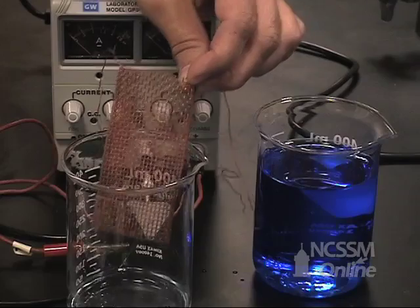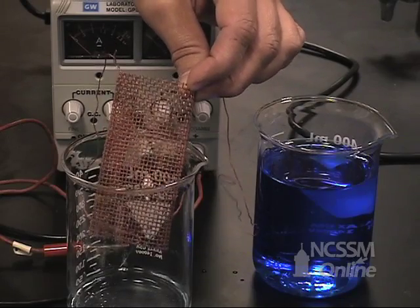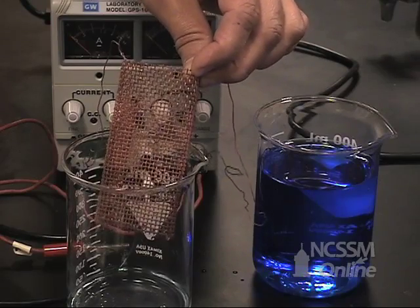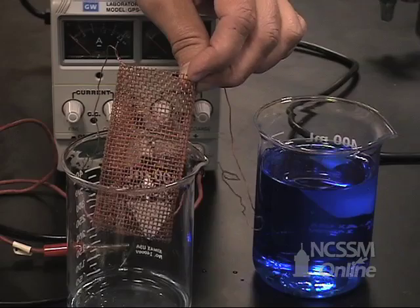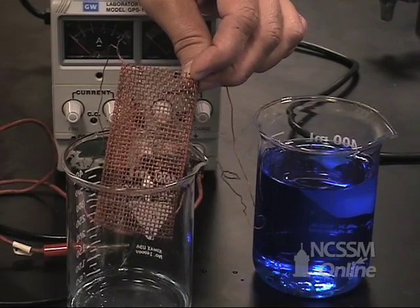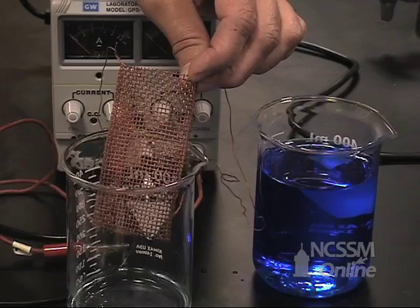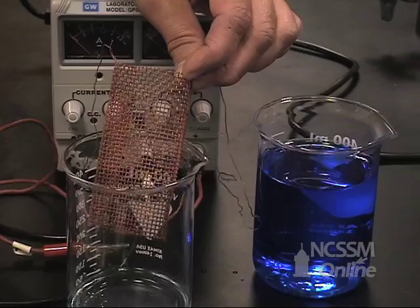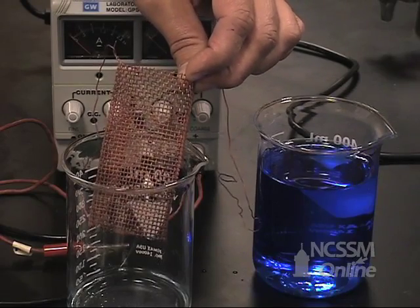We'll then remass the copper mesh. From the increase in the mass of the copper mesh, we'll be able to determine the amount of copper that's been plated on the electrode. We'll know the mass of the copper produced, the current, and the time. You'll be able to solve for the value for the Faraday.